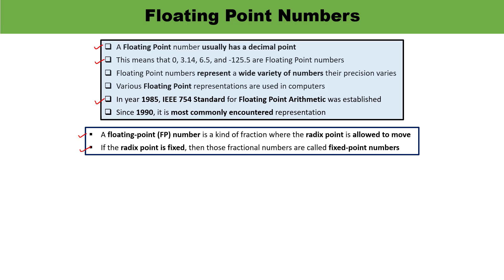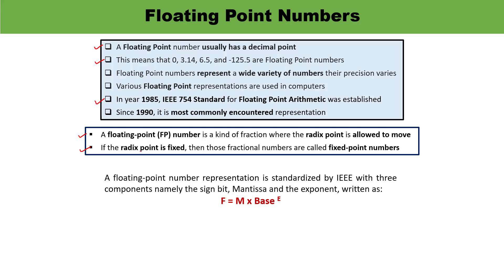In the case of floating point, the radix point moves. The floating point number representation standardized by IEEE has three components: sign bit, mantissa, and exponent. It is usually written as M into base raised to the power E, where E is the exponent and M is the mantissa.